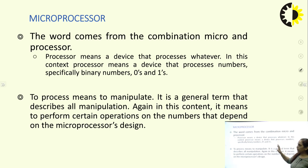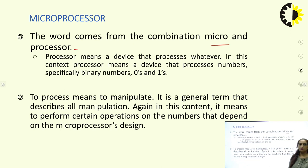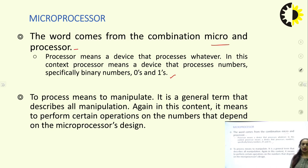The word microprocessor comes from the combination of 'micro' and 'processor.' Processor means a device that processes numbers, specially in terms of binary — logic 0 and logic 1. To process means to manipulate data as per our requirement, whether we want to add two numbers or subtract two numbers. Depending upon the processor's capabilities, we can process the data accordingly.